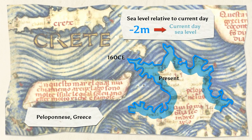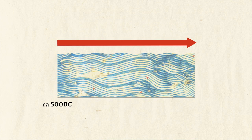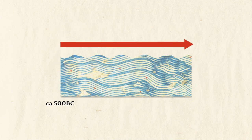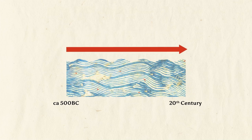Even though there are differences in sea level locally, generally scientists have agreed that global sea level changes have remained fairly constant since approximately 500 BC until the 20th century CE.